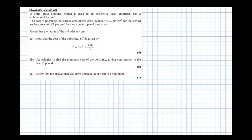We're now going to look at differentiation in a more practical context. The question describes a solid glass cylinder used in an expensive laser amplifier with a volume of 75π cm³. The cost of polishing the curved surface area is £2 per cm², and £3 per cm² for the circular top and base areas. Given that the radius is r cm, we need to show that the polishing cost C pounds is given by a specific formula.